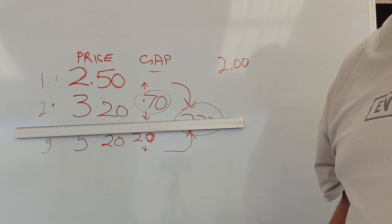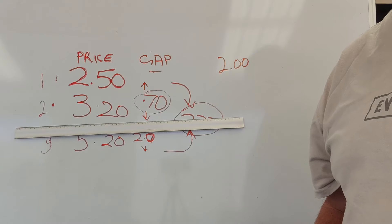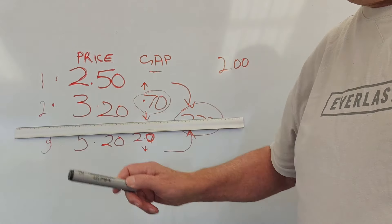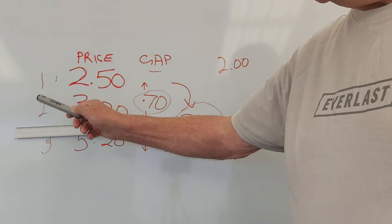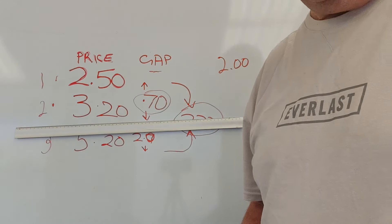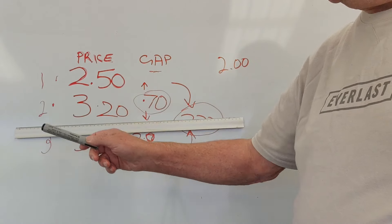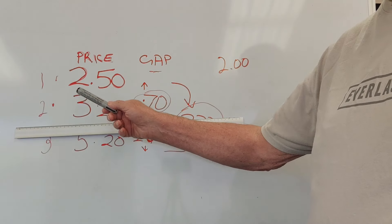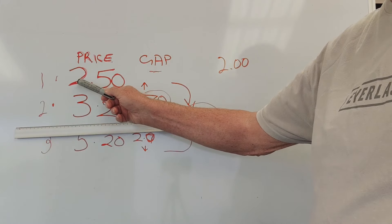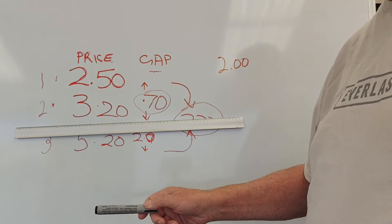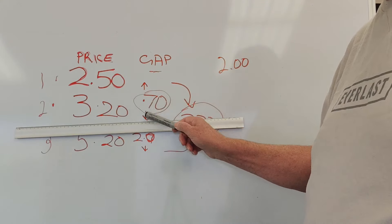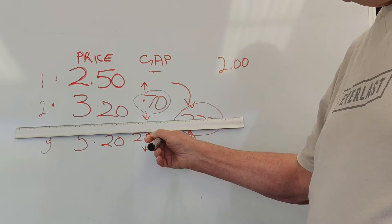What is Watch The Gap and how can it be of use to you? Watch The Gap is the gap between the first and second favorite, or the first and third favorite, or the second and third favorite, depending on how you want to program your settings. Initially we were looking at the gap between the first and second favorite — the price difference between them. In this case if the favorite was at $2.50 and the second favorite was at $3.20, the gap there would be $0.70.